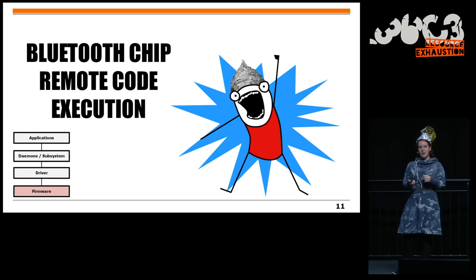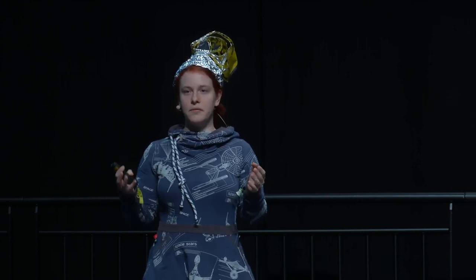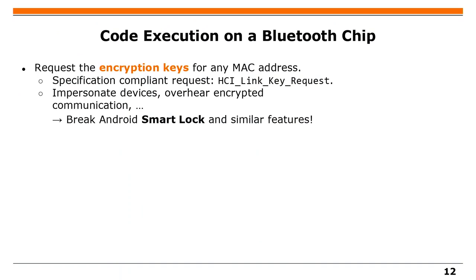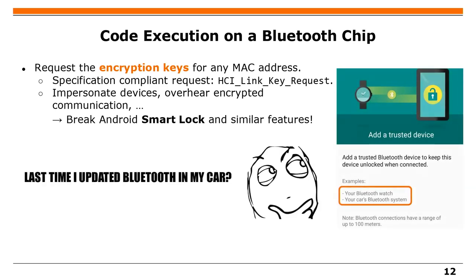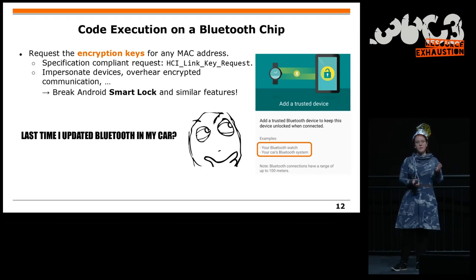For Bluetooth, the design is especially problematic. The first design issue is that the encryption key is stored such that the chip can always request it from the host, or it is already on the chip, with no security around this. Whenever you have code execution on the chip, you can get all the encryption keys — not just for the active connection — and break everything trusted by that key. This even breaks features like Android Smart Lock, which allows unlocking your Android phone when a trusted Bluetooth device is nearby, such as your car. But how secure is your car's Bluetooth? Would you trust it to unlock your smartphone?